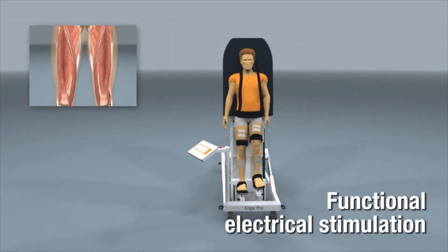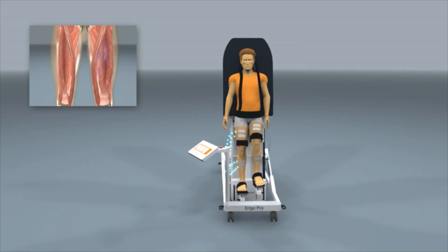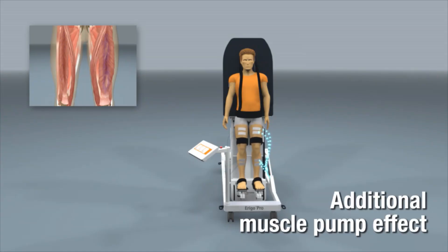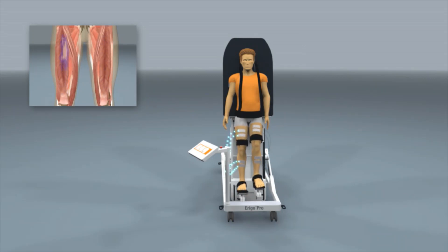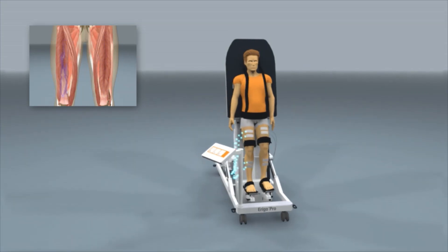The ERIGO functional electrical stimulation supports the contraction of the lower limb muscles and increases the muscle pump effect. The stimulation is fully synchronized with the robotic leg movements and offers up to eight adjustable channels.